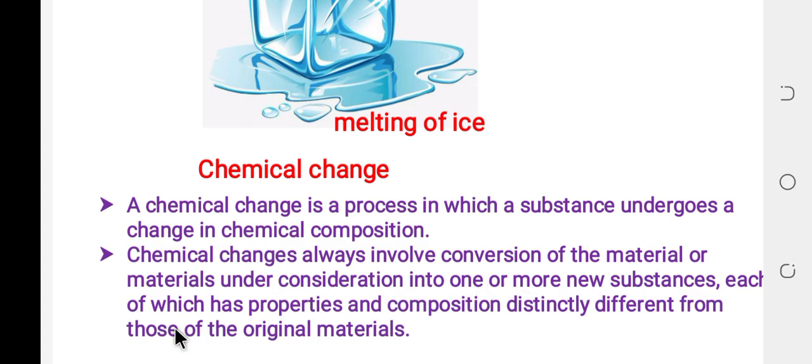In chemical change, new substances are formed, each of which has properties and composition that are distinctly different from those of the original matter. The substance formed is completely or distinctly different from the original material.